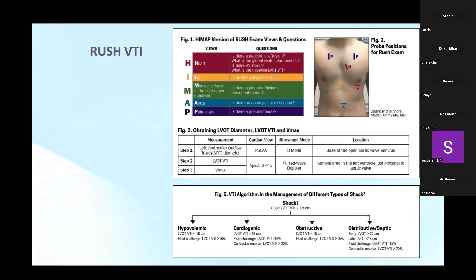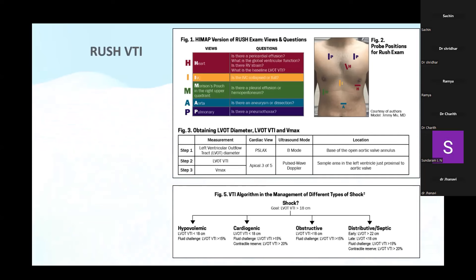For the algorithm: if VTI increases more than 15%, give fluid challenge; if contractile reserve is present (>20% increase with inotropes), give inotropes. For obstructive shock with VTI less than 18, give fluid challenge — if improving more than 15% fine, if not improving, relieve the obstruction. For distributive or septic shock: early VTI >22, if fluid challenge gives >15% increase, good; if not increasing, start inotropes; if >20%, the patient requires inotropic support.